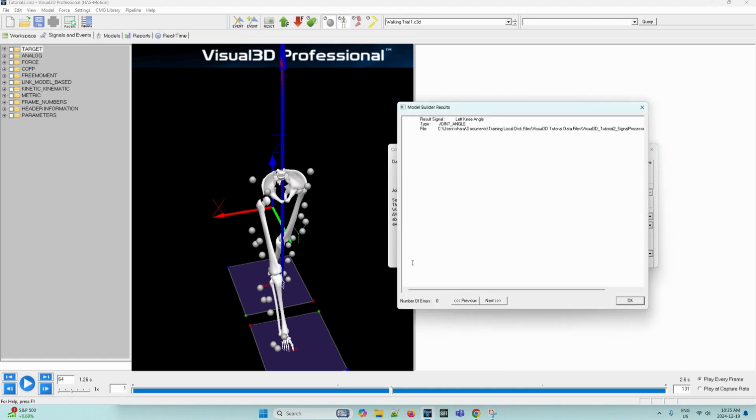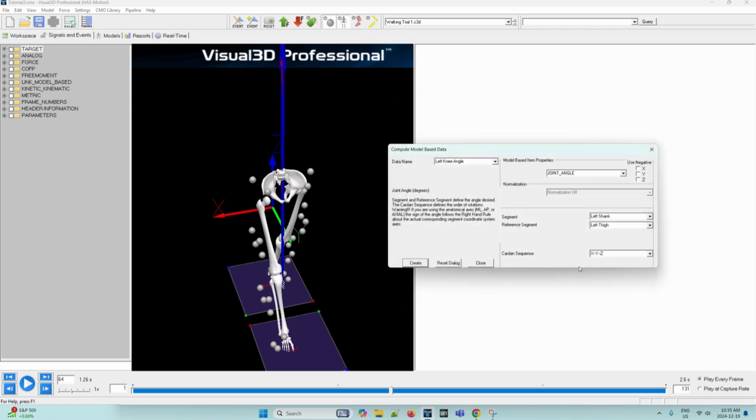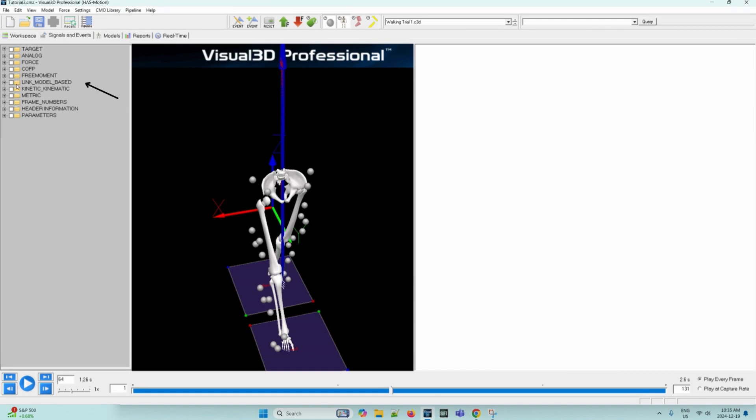After completing these steps, we can close these dialog boxes. And then we can look at the data tree. If we open the link model based folder, which was newly created, and then if we open the original sub folder, we can see that our left and right knee angles are present in here.